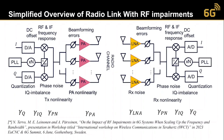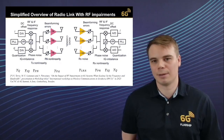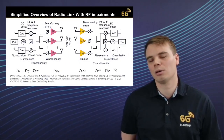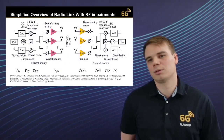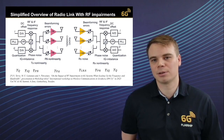In the receiver we have similar impairments: low noise amplifiers that have a noise figure and add noise to the signal, beamforming errors, phase noise, frequency responses, IQ imbalance, and quantization noise. All of these impairments impact signal quality and are all important to consider in high-frequency systems.